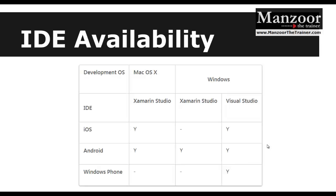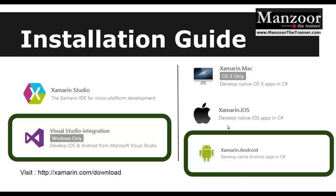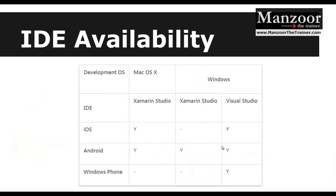The APIs are separate DLLs: if you want to develop an iOS app you need Xamarin.iOS API, and for Android you need Xamarin.Android API. The IDE, the operating system, and the target device are all factors. We are going to focus on Android app development on Windows using Visual Studio.